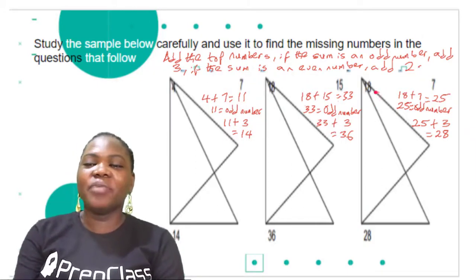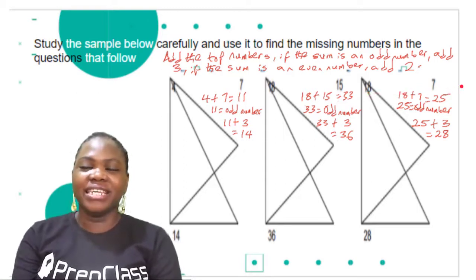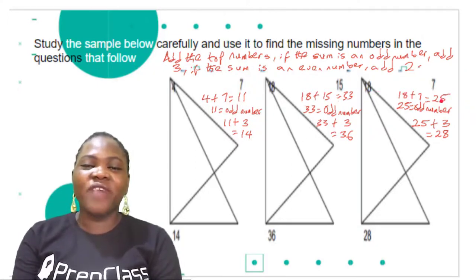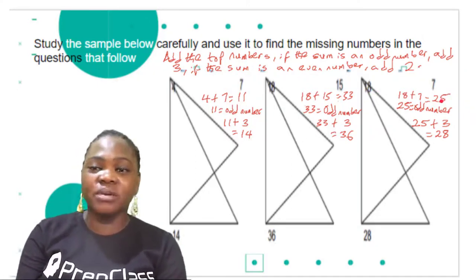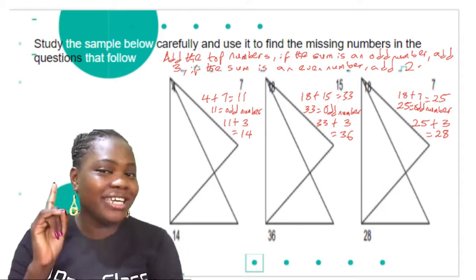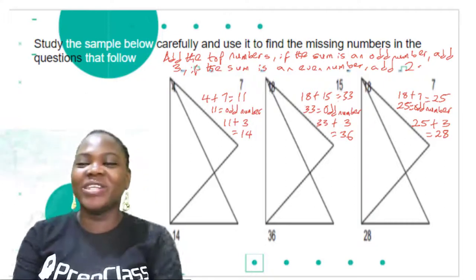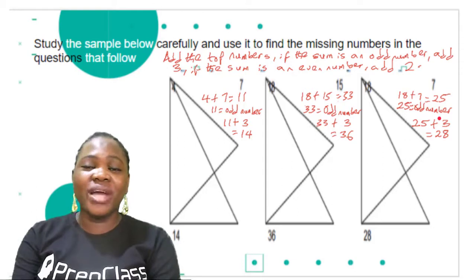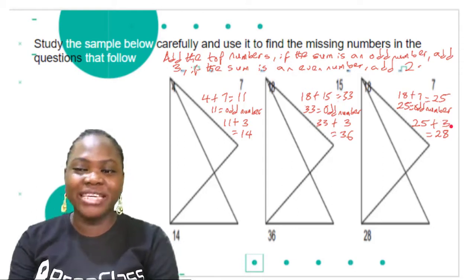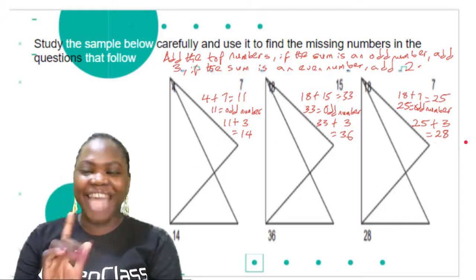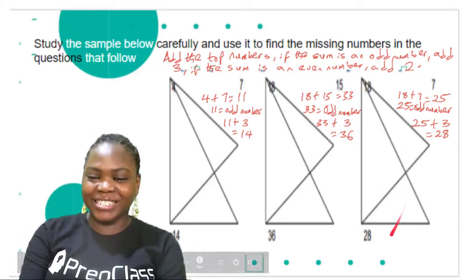Now let's look at the third sample. The top numbers are 18 and 7. 18 plus 7 is 25. And 25 is an odd number or an even number? It's an odd number because it ends in 5. So 25 plus 3 gives 28. That's correct.